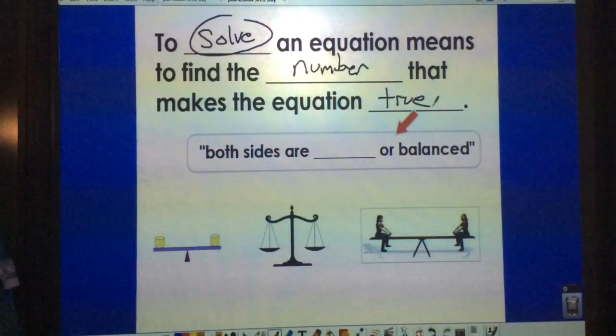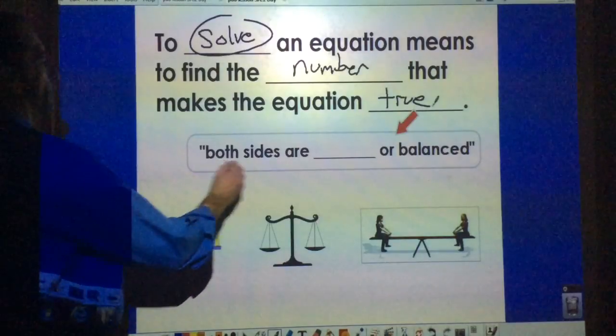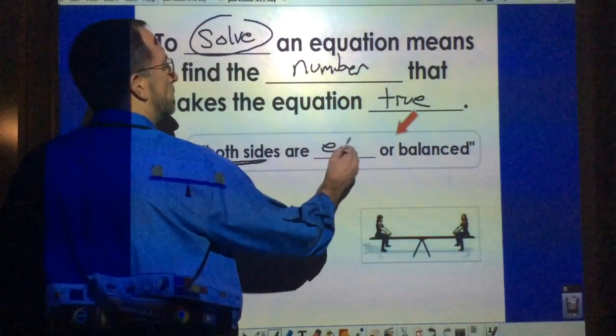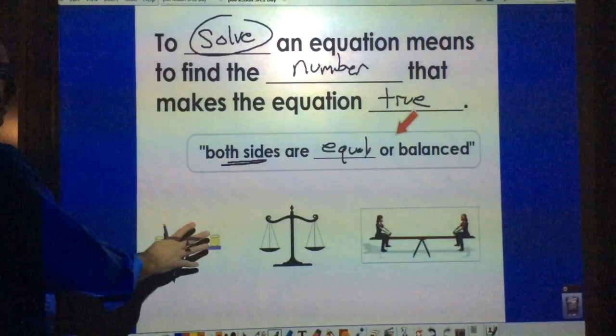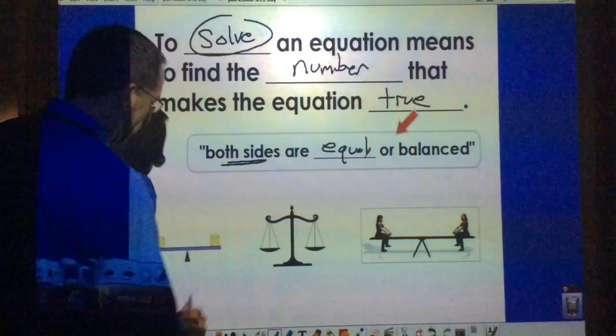In order to make an equation true, we want both sides to be equal or balanced, as we like to say, like in a balance or scale or a seesaw.